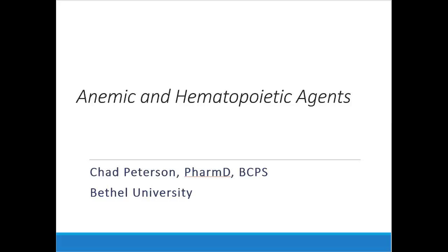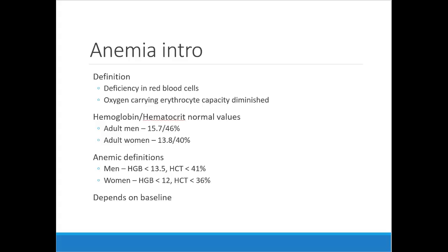This is the third lecture in the series — a short one — just touching base briefly on anemic and hematopoietic agents, talking about some anemias and common causes. Anemia is a deficiency in red blood cells, measured with hemoglobin or hematocrit, mostly looking at the hemoglobin level. For women, less than 12 is the standard definition, though it really depends on the patient's baseline — some patients may function okay even if mildly anemic.